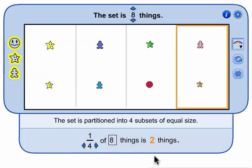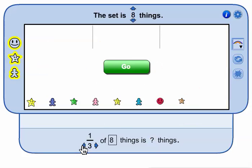Now let's explore this set some more. Change the number of partitions here. Now we are ready to explore whether a set of 8 things can be equally partitioned into 3 subsets of equal size. Think, then when ready click go.